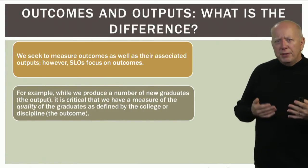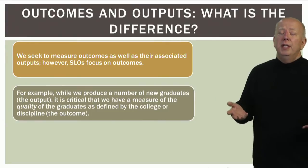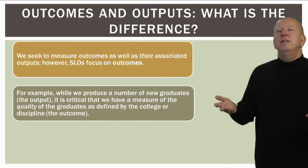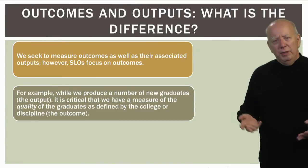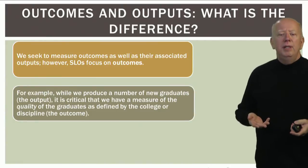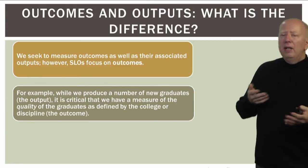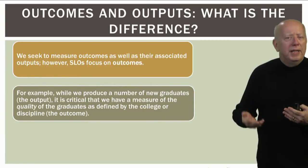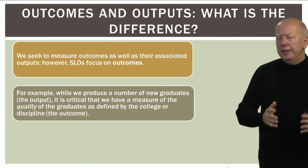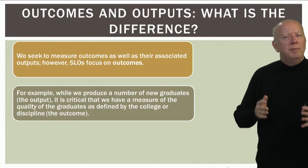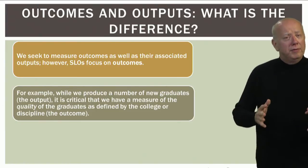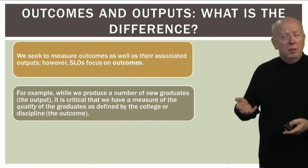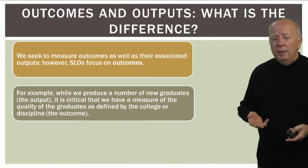For example, we might produce a number of new graduates — that's an output. But that number doesn't tell us anything about the quality of the graduates we've produced. The outcome defines the quality of the graduate we produce. Output is the number of graduates; outcome has to do with the quality of those graduates and what they know and are able to do at the end of their program.